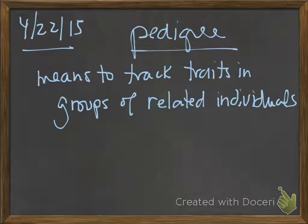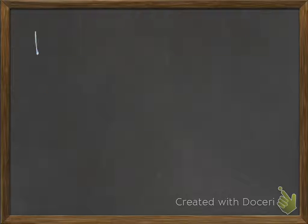It's a diagram, a visual image of a group of related individuals. The basics are that squares are males, so square is a male, and a circle is a female. We only have two options because we're only dealing with biological sex here.